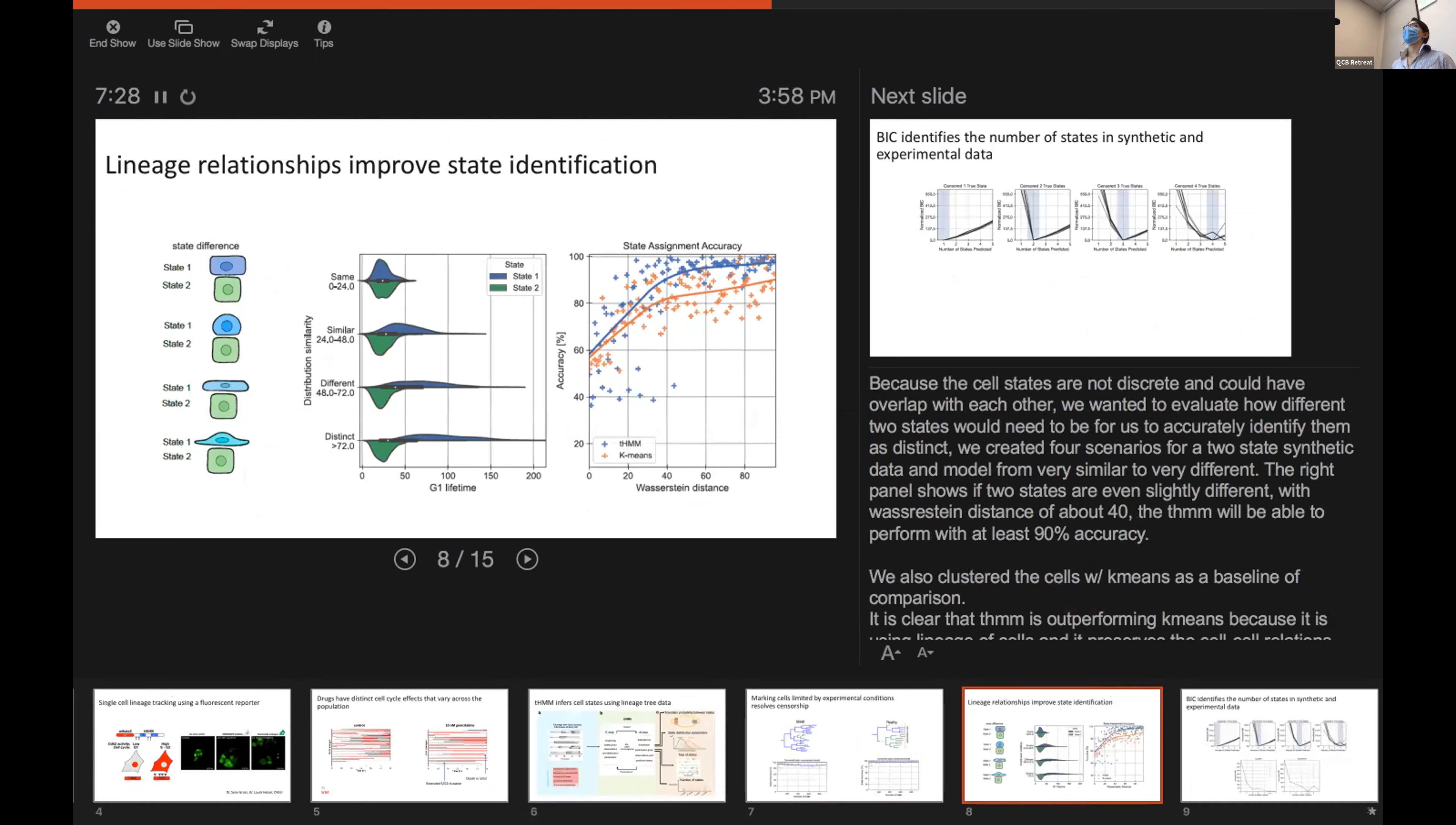Because the cell states are not discrete and they could have overlap, we wanted to know how different two states have to be for our model to be able to distinguish them. So, we created synthetic data of two states from very similar to very different, in a way that we calculated the distance between the states using Wasserstein distance.